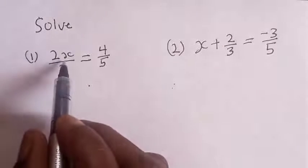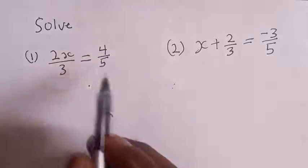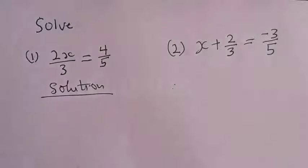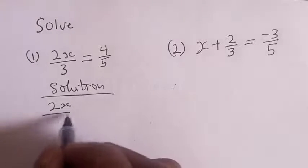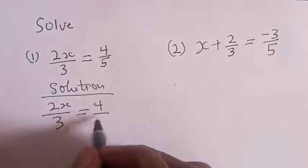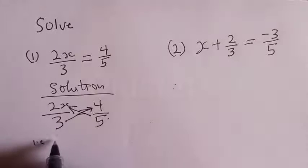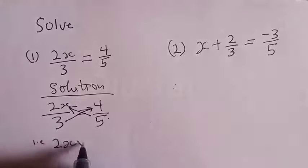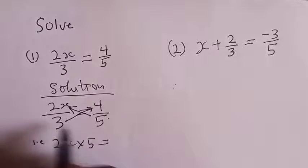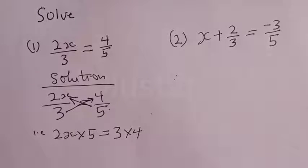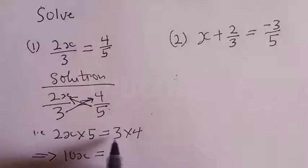Question number one says: solve 2x over 3 is equal to 4 over 5. Let's use our cross multiply method. Solution: we have 2x over 3 is equal to 4 over 5. That is 2x multiplied by 5 will be equal to 3 cross multiplied by 4. This implies that 2x times 5 is equal to 10x, which is equal to 3 times 4, which is 12.